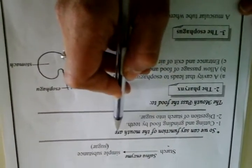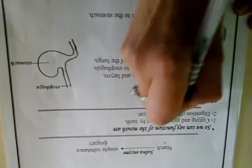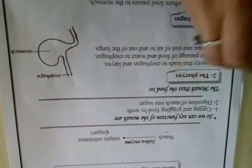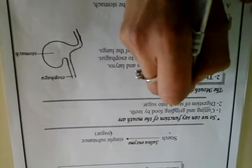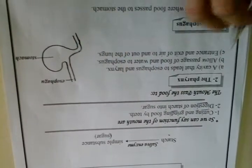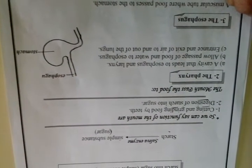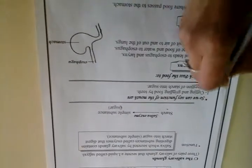So the functions of the mouth are: number one, cutting and grinding by teeth; number two, digestion of starch into sugar. That's the function of the mouth. We have now discussed the components of the mouth. In the second session, we will follow the passage of food in the digestive canal. Thank you.